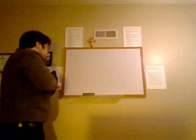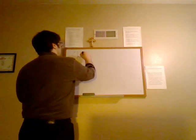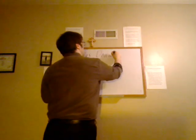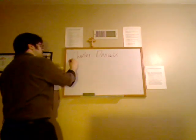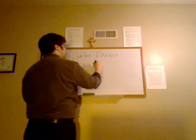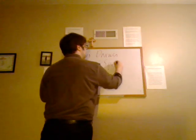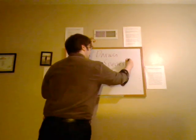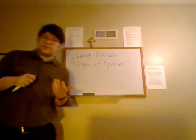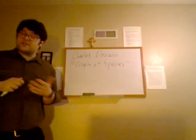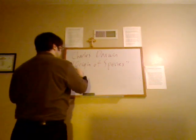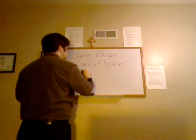And this gets back to Charles Darwin, who wrote his famous book Origin of Species, in which he posits his very famous theory of how life evolves. It's sometimes called the theory of evolution, but the proper term is the theory of natural selection.